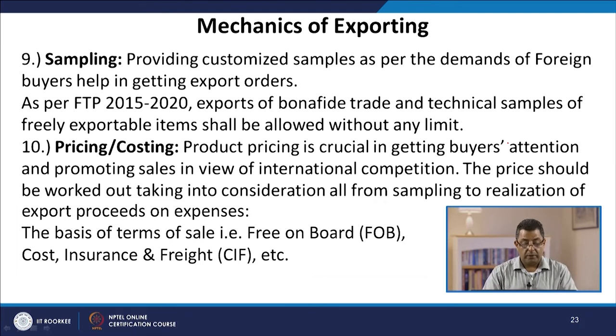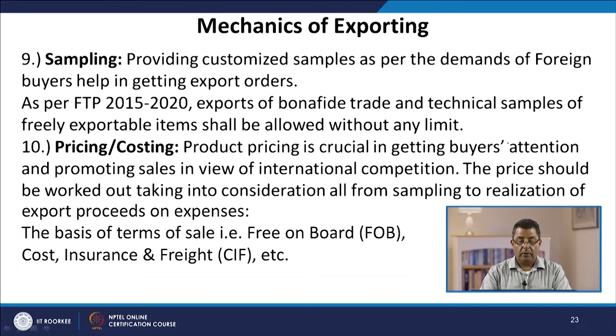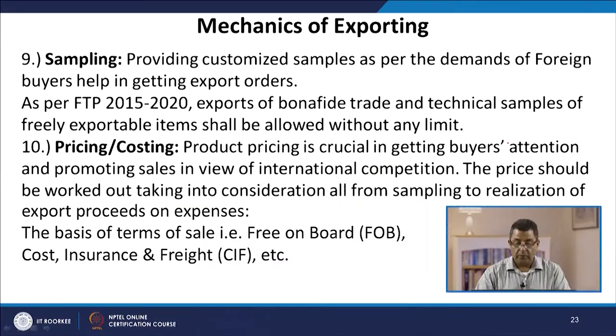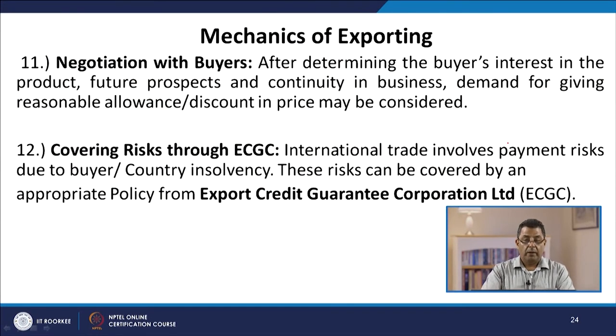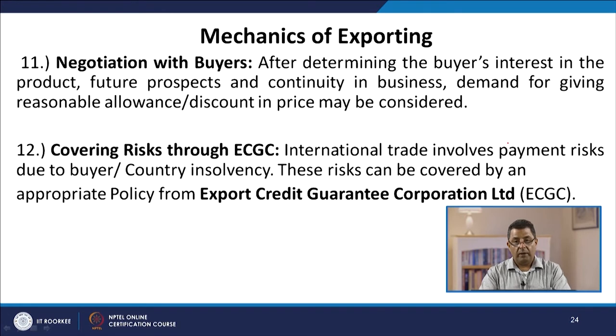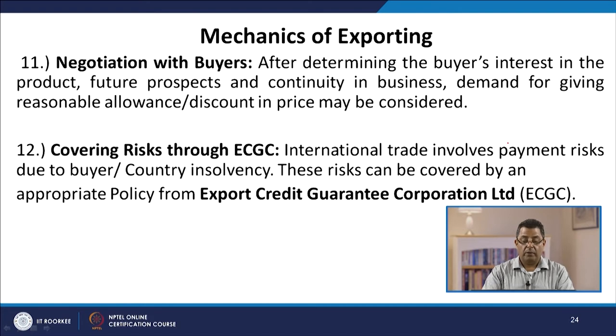The next step is pricing and costing. Product pricing is crucial in getting the buyer's attention and promoting sales in view of international competition. The price should be worked out taking into consideration all expenses from sampling to realisation of export proceeds. There can be various basis of terms of sales, such as free on board and CIF. The next step is negotiating with the buyer, since the buyer and seller will have different terms and conditions. After determining the buyer's interest, future prospects, and continuity in business, reasonable allowances, discounts, and price adjustments may be considered.